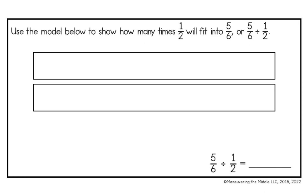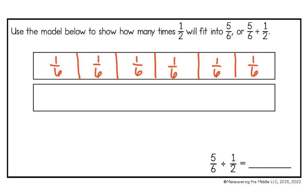Use the model below to show how many times 1 half will fit into 5 sixths, or 5 sixths divided by 1 half. My top fraction bar is going to match our first fraction, which is 5 sixths. So I need to start by breaking this into 6 groups. Now that I've broken it into 6 groups, I need to take 5 of those and shade them in by putting a yellow box around 5 of the boxes. That represents 5 sixths.